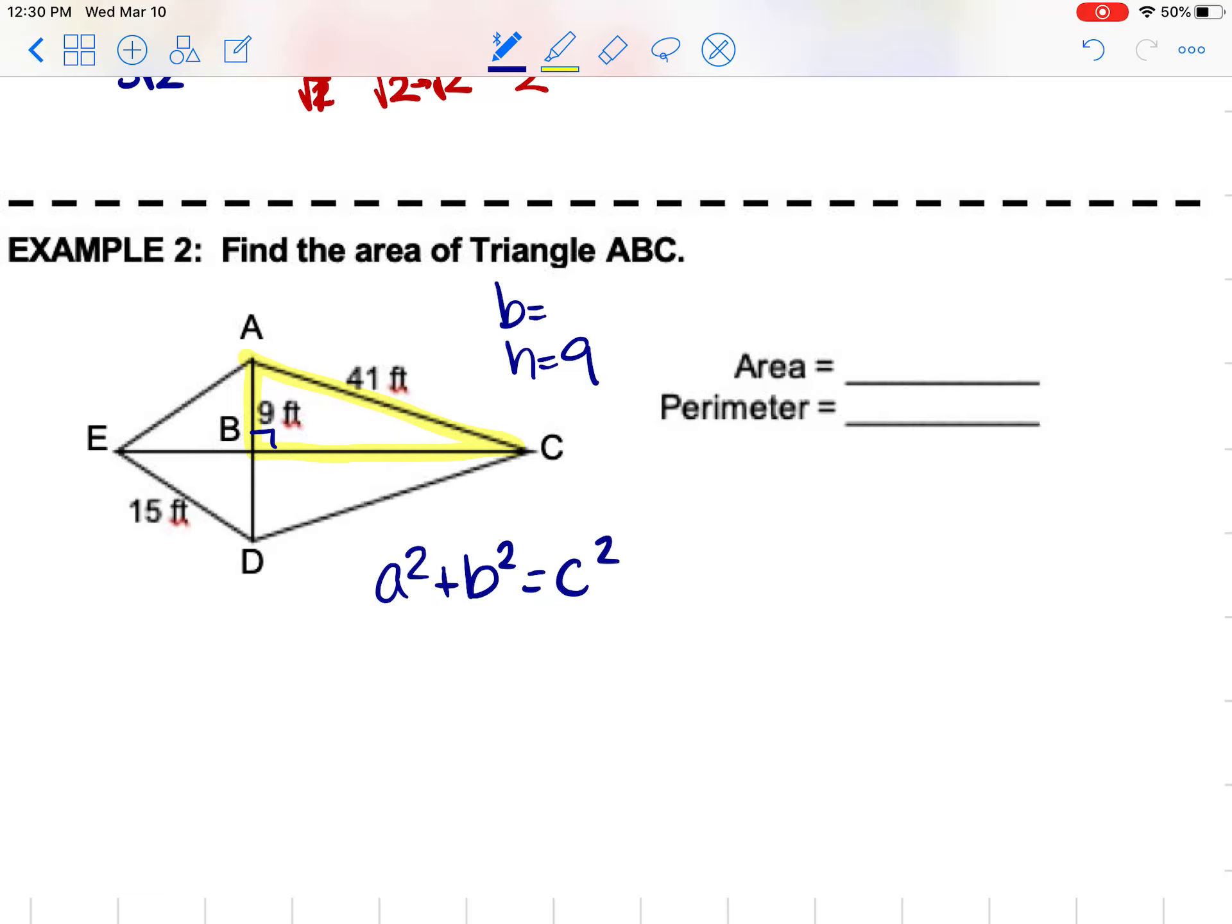So let's see what parts of this we have. 9 could be either your A or your B. 41 is across from the right angle, so that has to be our C. And so we're going to move this 9 squared over. We can plug that into our calculator. 41 squared minus 9 squared. B squared would equal 1600. And then if we square root that, B would equal 40.